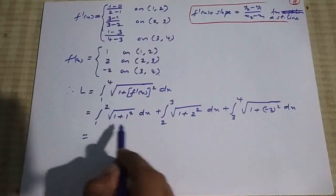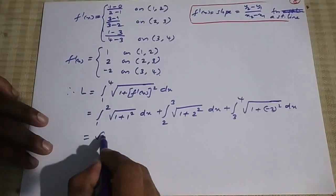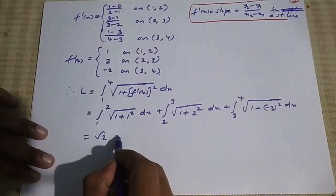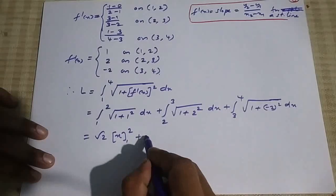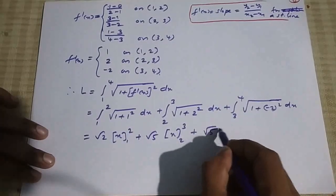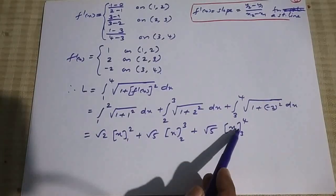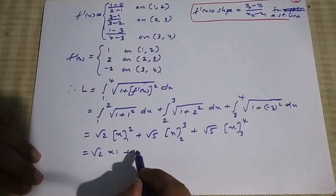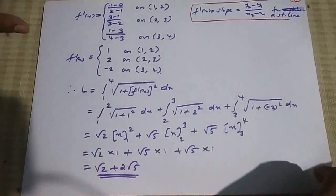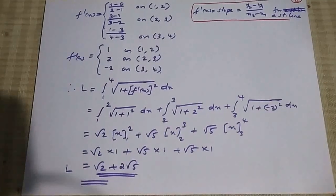Evaluating: √2 · (2-1) + √5 · (3-2) + √5 · (4-3) = √2 · 1 + √5 · 1 + √5 · 1 = √2 + 2√5. This is the same as the value obtained by the direct method, so the arc length is confirmed to be √2 + 2√5. Thanks for watching.